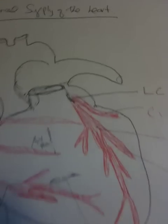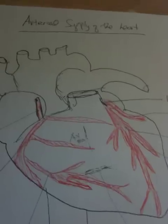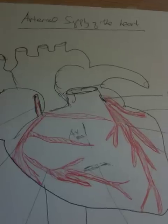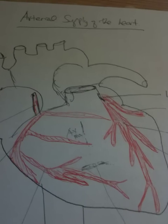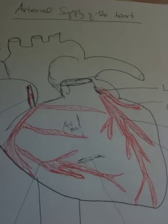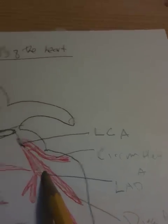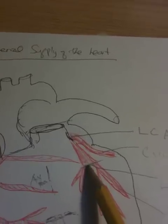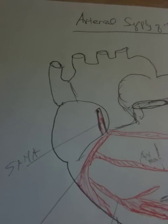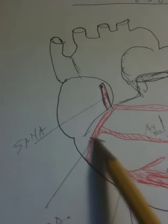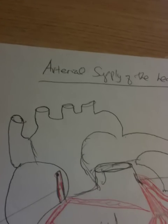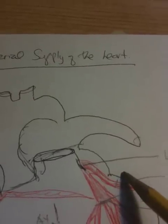A clinical correlate to remember is that in myocardial infarction, the left anterior descending artery is obstructed in 50% of cases, the right coronary artery in 30% of cases, and the circumflex artery in 20% of cases. So the LAD, the left anterior descending artery, is usually what is occluded most of the time in myocardial infarcts. The right coronary artery is occluded 30% of the time, and the circumflex artery is occluded 20% of the time.